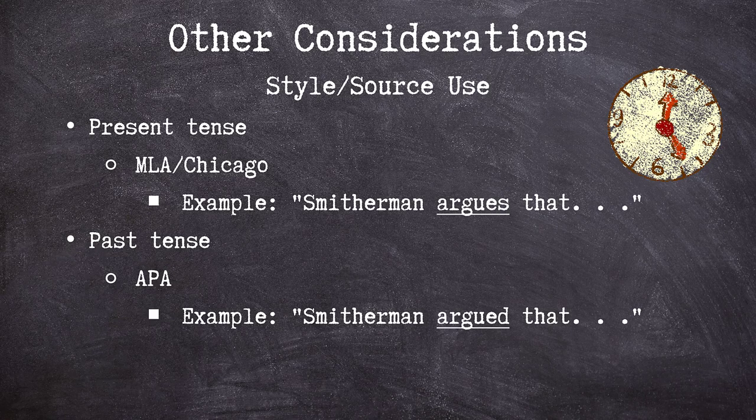There are a few other considerations to keep in mind when using tenses in different academic writing styles. In MLA and Chicago style, present tense is used when discussing source material. Our example, 'Smitherman argues that,' shows present tense in a signal phrase introducing material from an outside source. APA, however, prefers the past tense be used when discussing source material. 'Smitherman argued that' uses the past tense and meets APA guidelines.